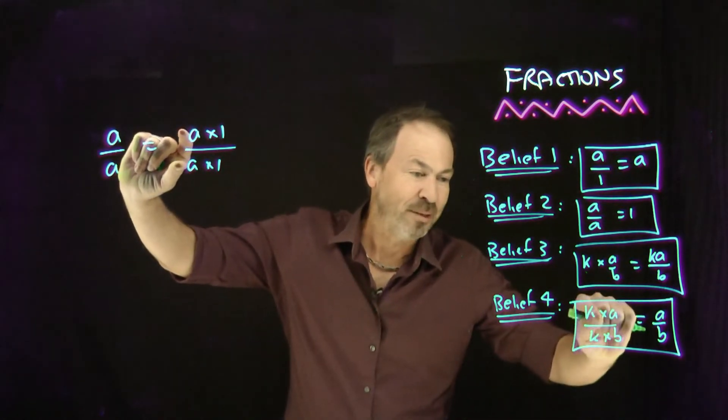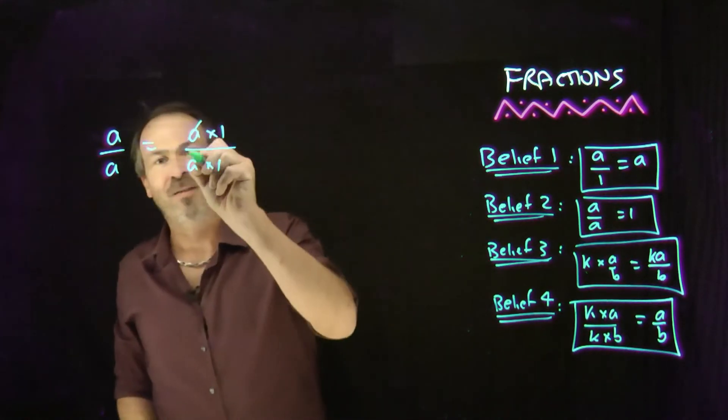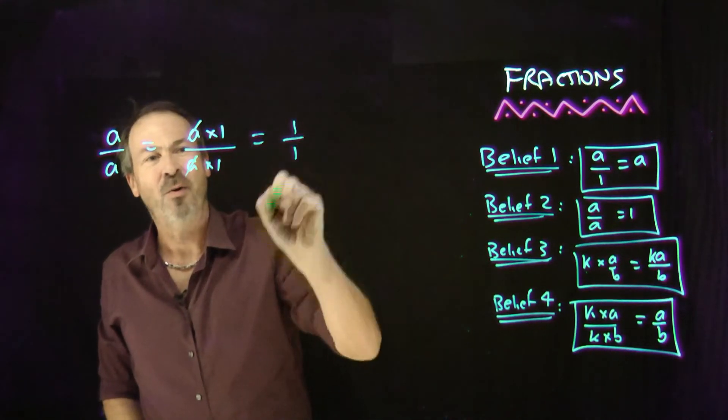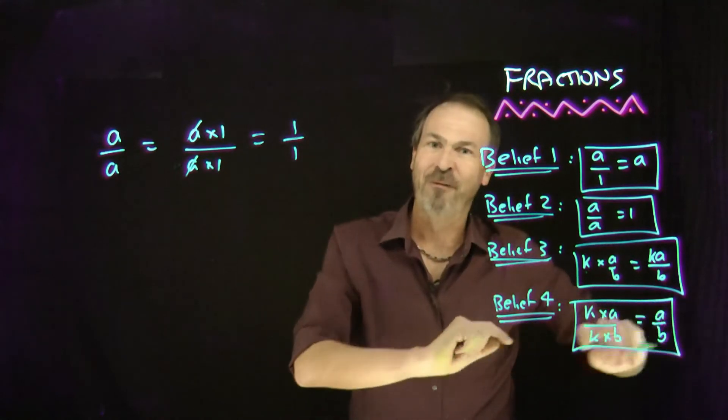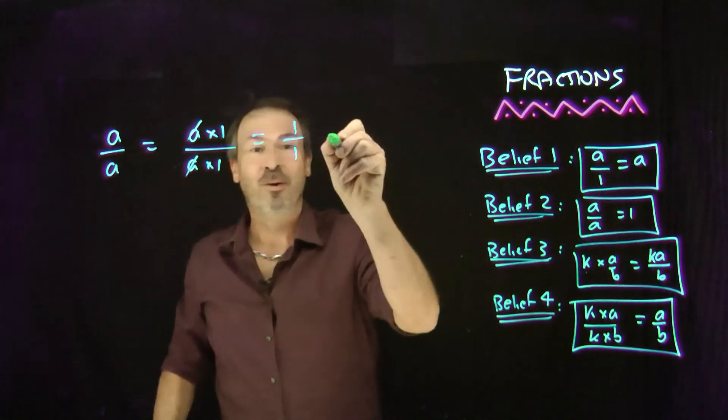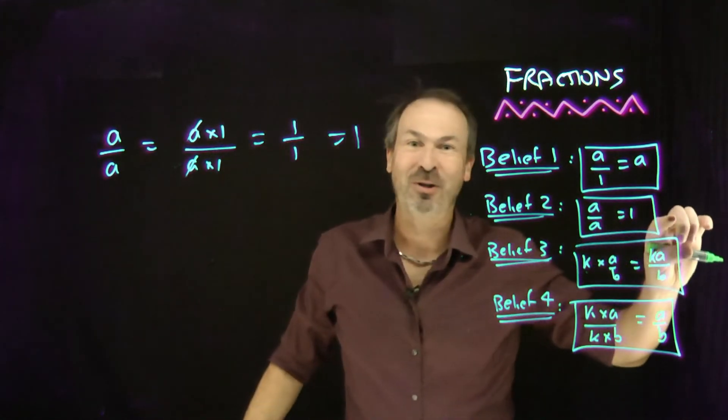Oh, but now I see a common factor. In fact, belief number four says if you see a common factor, you can pretend it's not there. Get rid of it. So this is really the same as one over one, according to belief number four, which we just said equals one, which is what belief number two wanted.